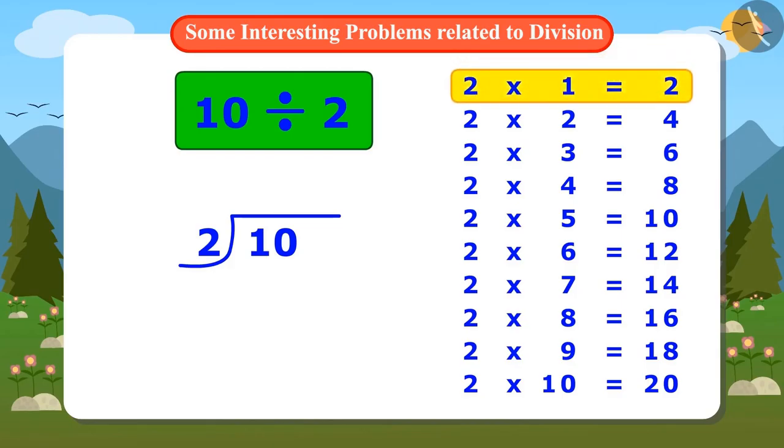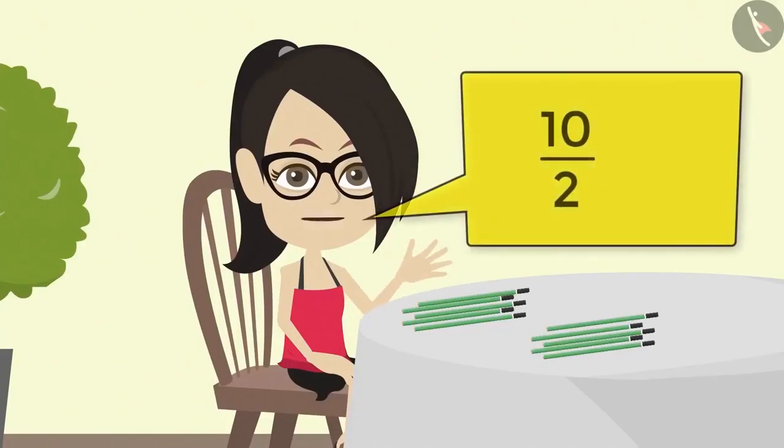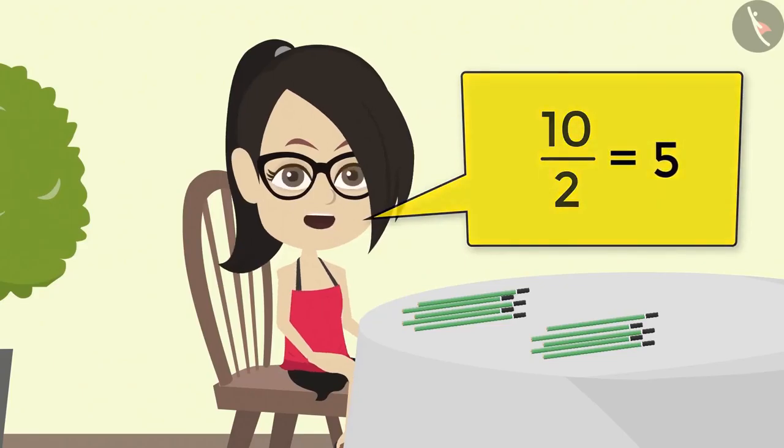Two ones are two. Two twos are four. Two threes are six. Two fours are eight. Two fives are ten. Two fives are ten. That is, two times five is ten. The answer is five when ten is divided by two. Let's tell mummy.